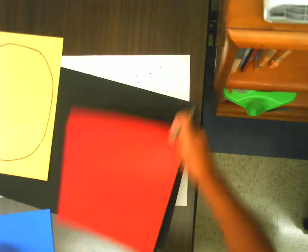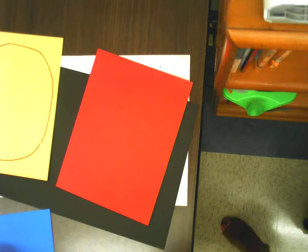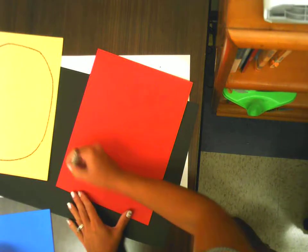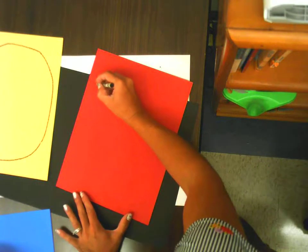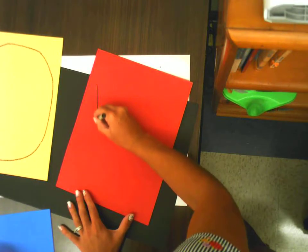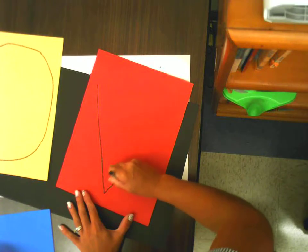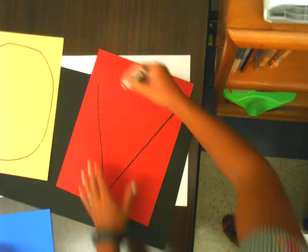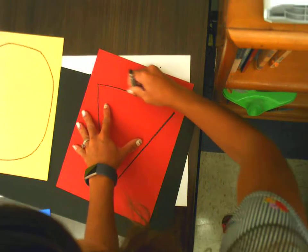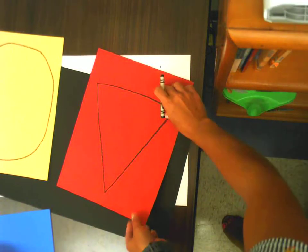Next we're going to get our red paper and we are going to make a triangle. To make a triangle, start with the letter V. After you make the letter V, put a top on it. When you turn it around, we will have our triangle.